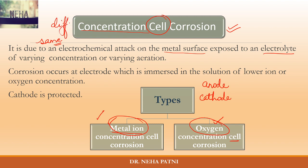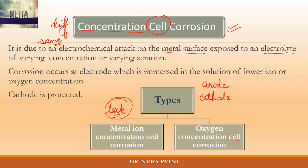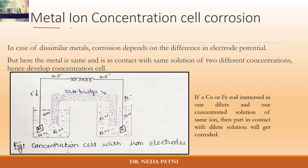To remember: a concentration cell develops when there is a difference in concentration of either metal ion or oxygen. To identify which is cathodic and which is anodic — corrosion always occurs at the anodic area. Wherever there is a lack of oxygen or lack of metal ion, that area becomes the anode and gets corroded, while the cathode is protected.